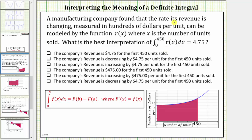Because r(x) gives the rate at which the revenue is changing measured in hundreds of dollars per unit, hundreds of dollars per unit would be the units for the vertical axis. And because x is the number of units sold, the units on the horizontal axis would be number of units. Now to help understand what this 4.75 means, let's analyze the units of this area on the next slide.